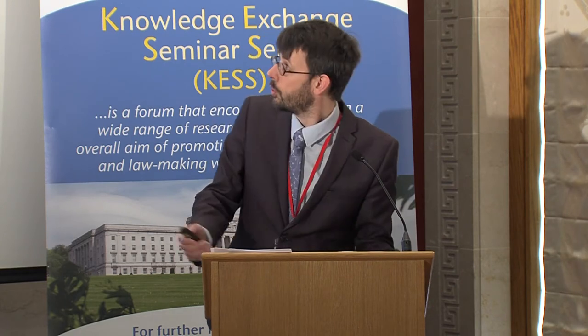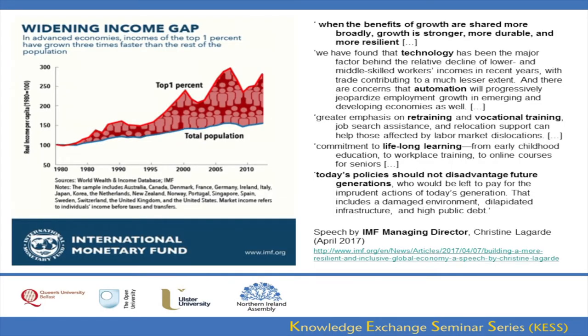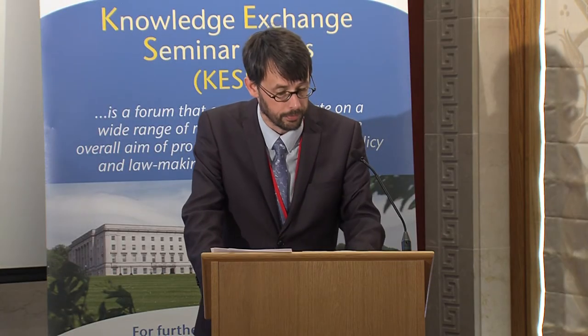Two examples of policy prescriptions: the first from IMF Director Christine Lagarde, speaking in April of this year. She suggested that when the benefits of growth are shared more broadly, economic growth is stronger, more durable and more resilient. She notes that technology has been the major factor behind the relative decline of lower and middle-skilled workers' incomes in recent years — less so trade — and there is concern that automation, the rise of robots and artificial intelligence, will progressively jeopardize employment growth in both emerging and developed economies.